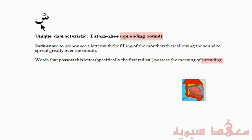Sheen is pronounced as 'Sh' — it's like when you tell somebody to be quiet, you say 'Sh'. That's the Sheen. The definition of this characteristic is to pronounce a letter with the filling of the mouth with air, allowing the sound to spread greatly over the mouth. To demonstrate this, put your hand next to your mouth and pronounce this letter, 'Sh', and you can actually feel the air flow in all directions.